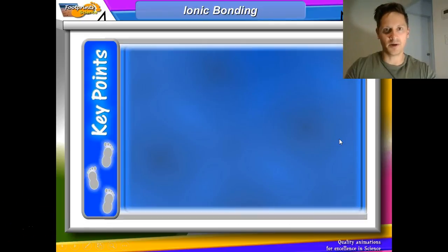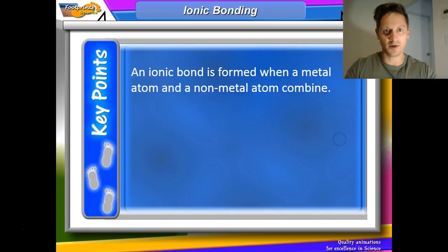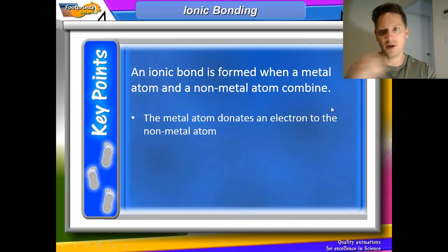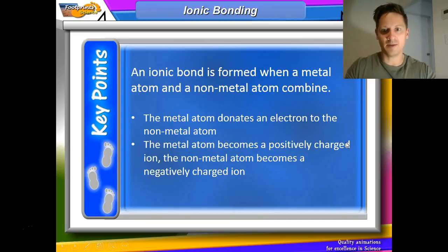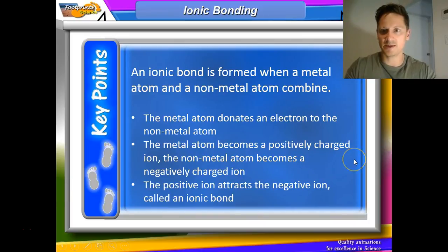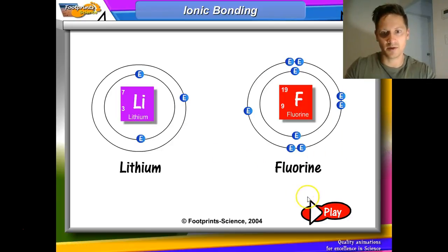The second part is ionic bonding. That exists between metals and non-metals. When a metal and a non-metal atom combine, you're looking at your periodic table in order to determine that. The metal atom donates an electron to the non-metal. The metal atom becomes positively charged because it loses an electron. So less negative charge equals a positive ion. And the non-metal atom becomes a negatively charged ion. The positive attracts the negative, and that electrostatic force of attraction is called an ionic bond.